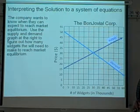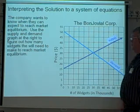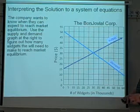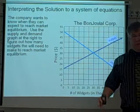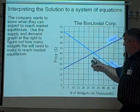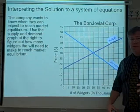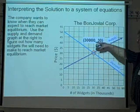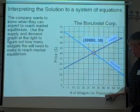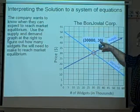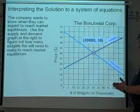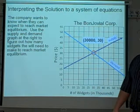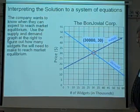Okay, the company wants to know when they can expect to reach market equilibrium. Use the supply and demand graph at the right to figure out how many widgets they will need to make to reach market equilibrium. Market equilibrium, according to the definition, is when the supply and demand graphs meet. It's the solution to the system of equations. It's that point right there. The coordinate for that point is 30,000 and $30. 30,000 because the widgets are a number of thousands here. And price is at $30. So if they price this at $30, they're going to sell 30,000 units and they'll sell them all. There won't be any extra demand. There won't be any shortage of product.